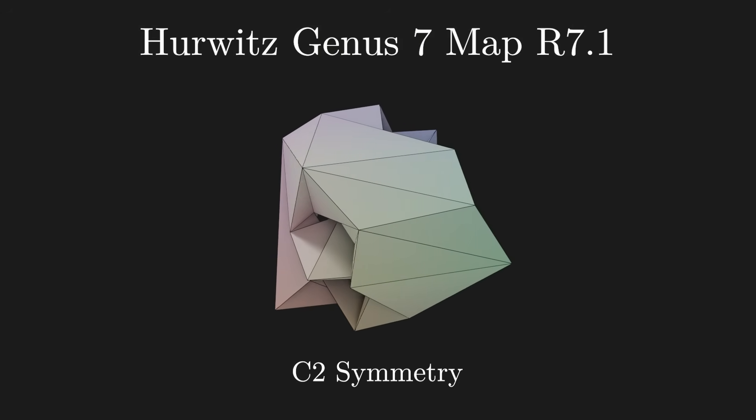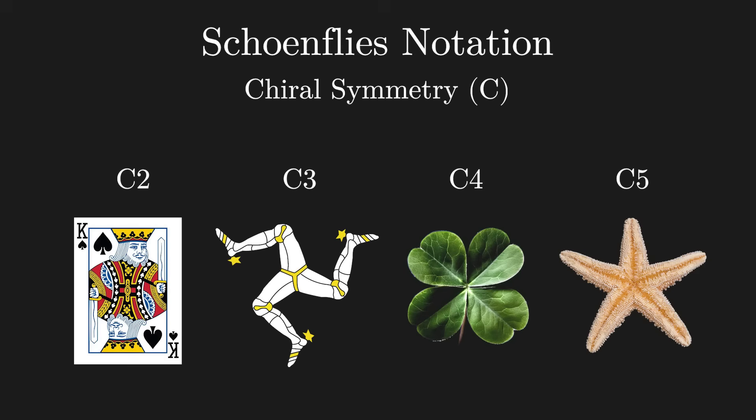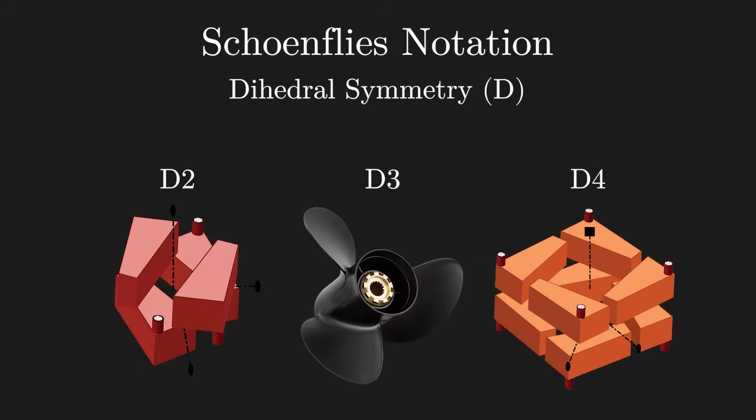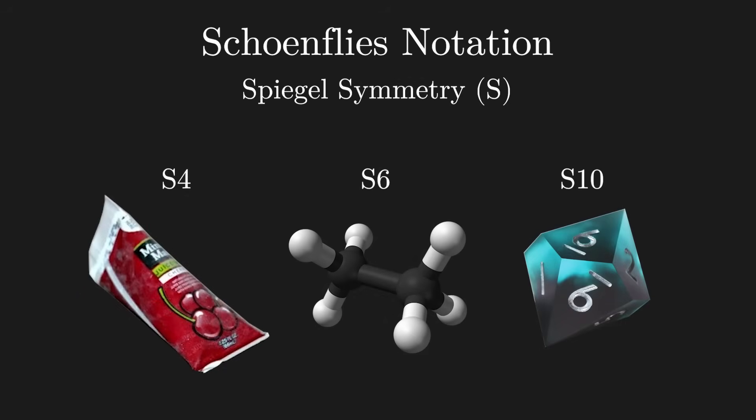I guess I'll also quickly explain some of the Schoenflies notation. The C stands for chiral symmetry, the most familiar one. It's a repeated symmetry around an axis. D is a dihedral symmetry, which is like a chiral symmetry plus another 180-degree symmetry on a perpendicular axis.